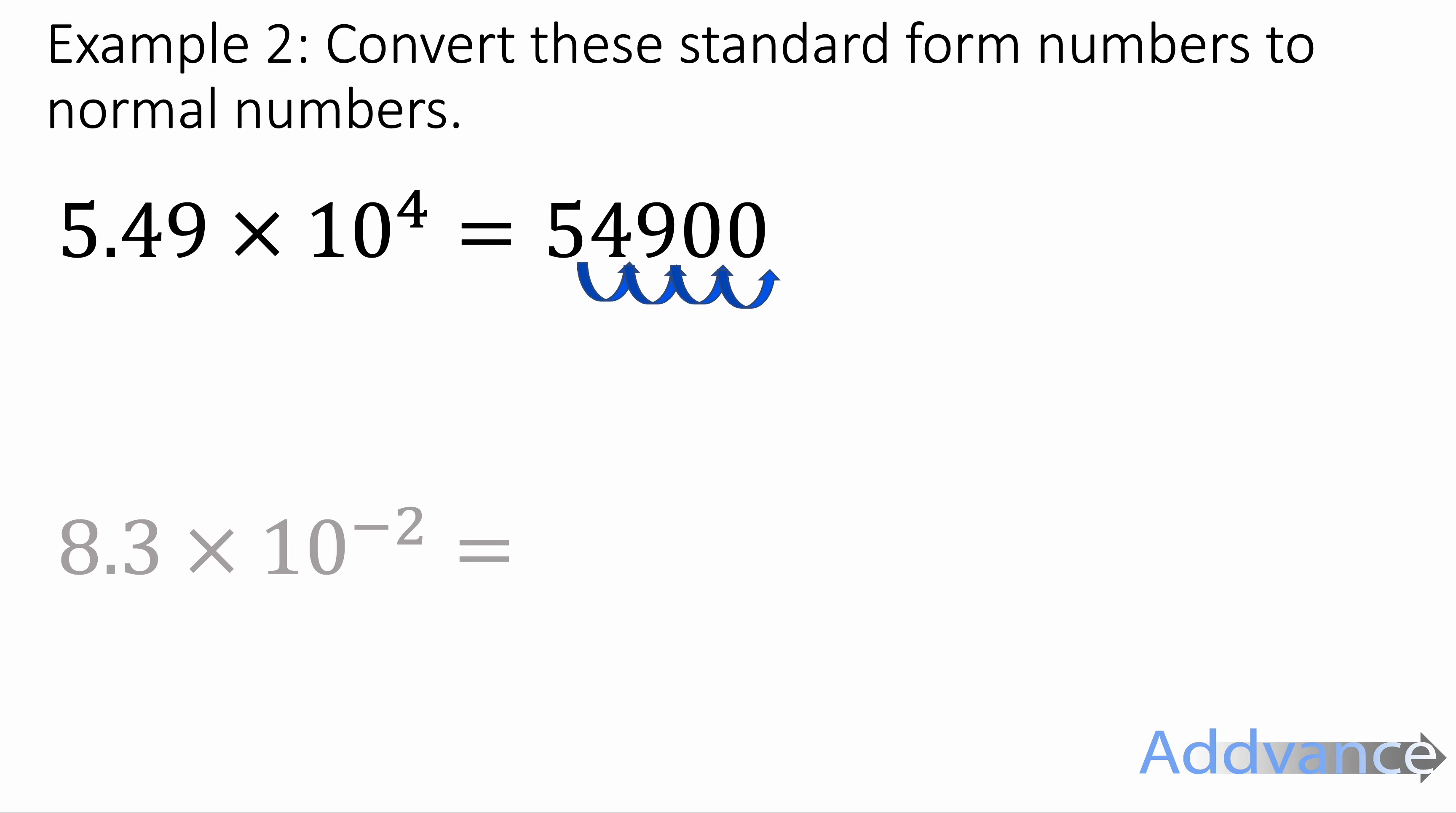Let's go the other way now. Let's convert these numbers to normal numbers. So 5.49 times 10 to the power of 4. We're going to move the decimal 1, 2, 3, 4 places and fill in the missing digits with zeros. And we get 54,900. Like that.